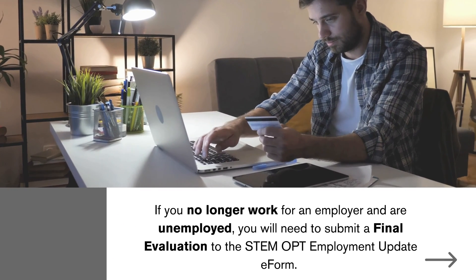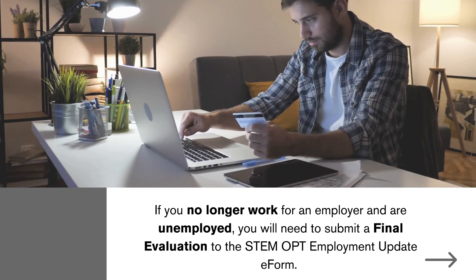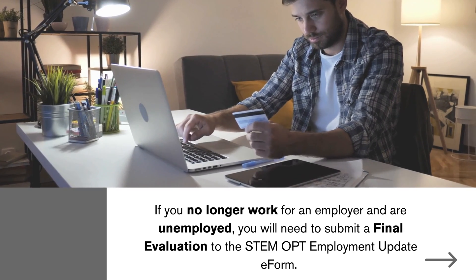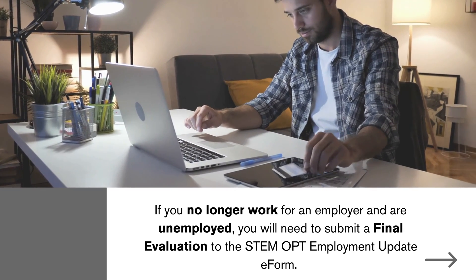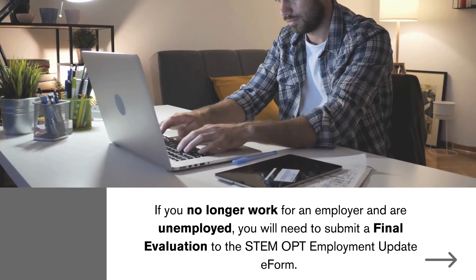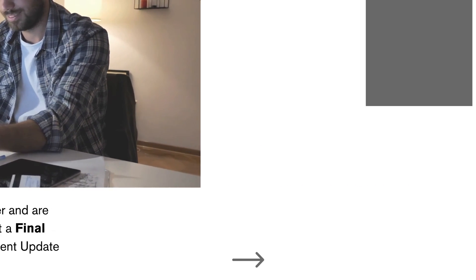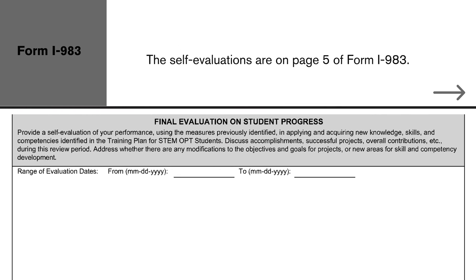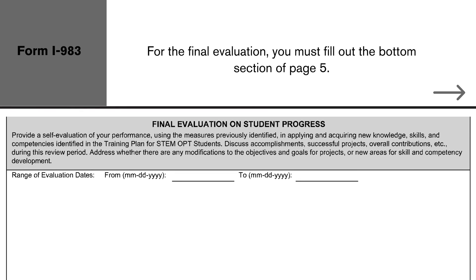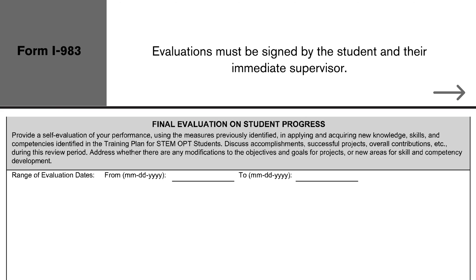If you no longer work for an employer and are unemployed, you will need to submit a final evaluation to the STEM OPT Employment Update e-form. The self-evaluations are on page 5 of Form I-983. For the final evaluation, you must fill out the bottom section of page 5. Evaluations must be signed by the student and the immediate supervisor.